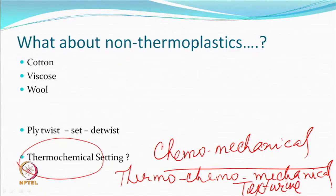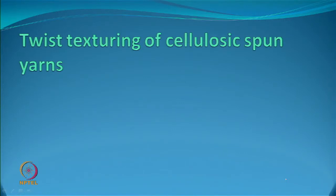Whenever chemicals come into play, you are not dealing with a completely dry process, so all the difficulties of a wet process have to be considered. Although final chemical reactions may take place quickly, the time requirements here are not easily comparable with the thermal system. So let us look at texturing of cellulosic spun yarns — which means cotton, viscose, and such materials.